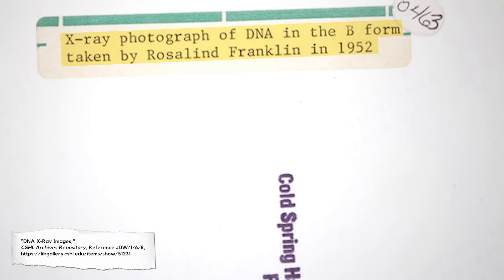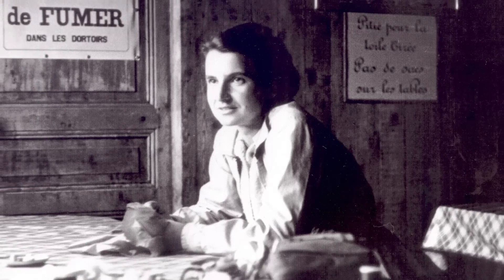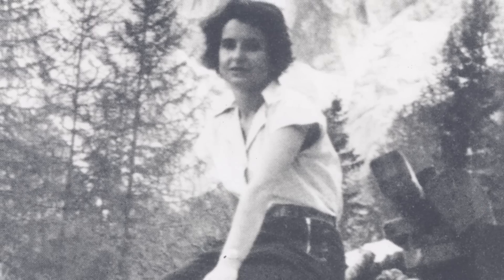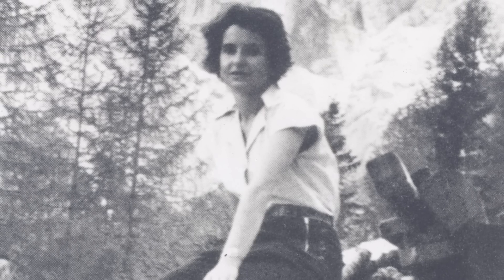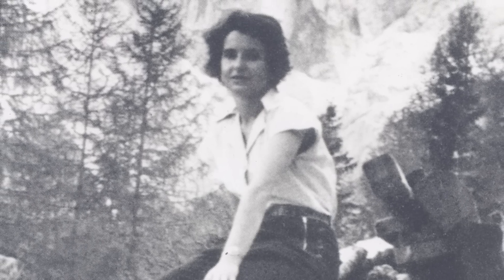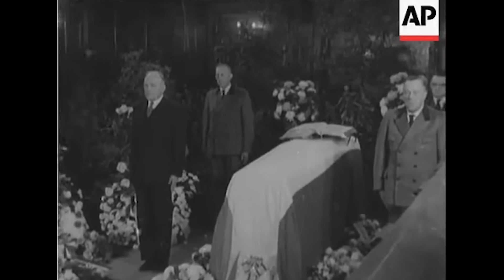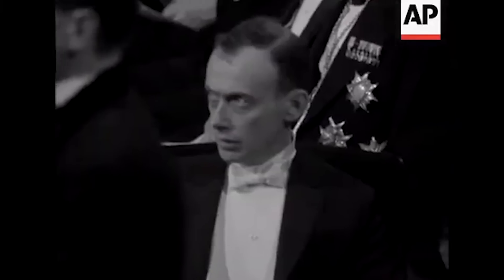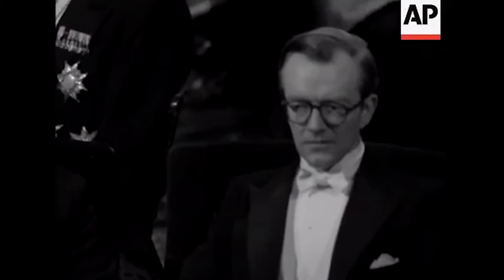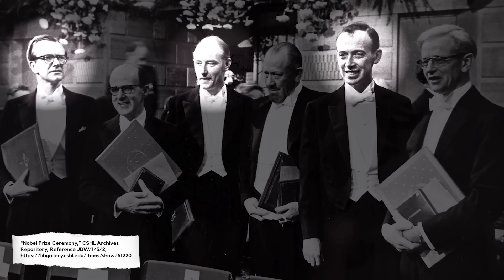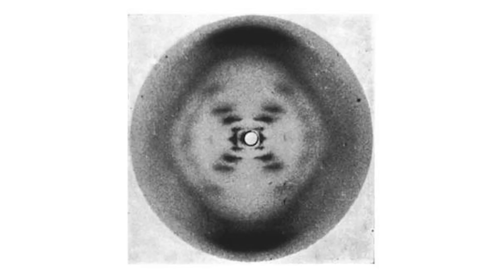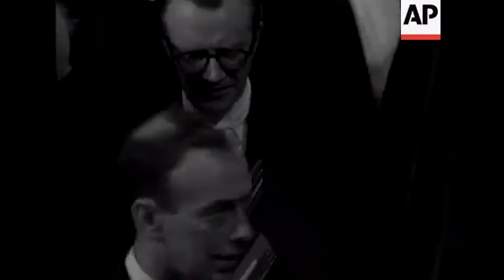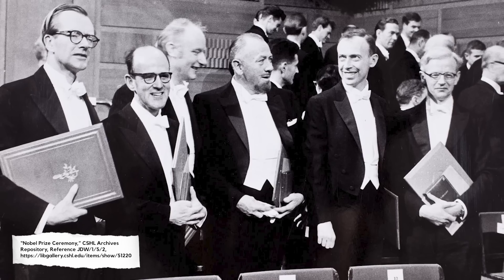If you've heard about Rosalind Franklin before, you might have heard about her as someone who had her work stolen and was left out of getting credit for discovering the structure of DNA. That comes from the fact that a Nobel Prize was given for figuring out the structure of DNA, but it didn't go to Rosalind Franklin — it went to three people: Watson, Crick, and Wilkins. So let's briefly recap how we went from having this photo taken in Franklin's lab to having a Nobel Prize for three other people.